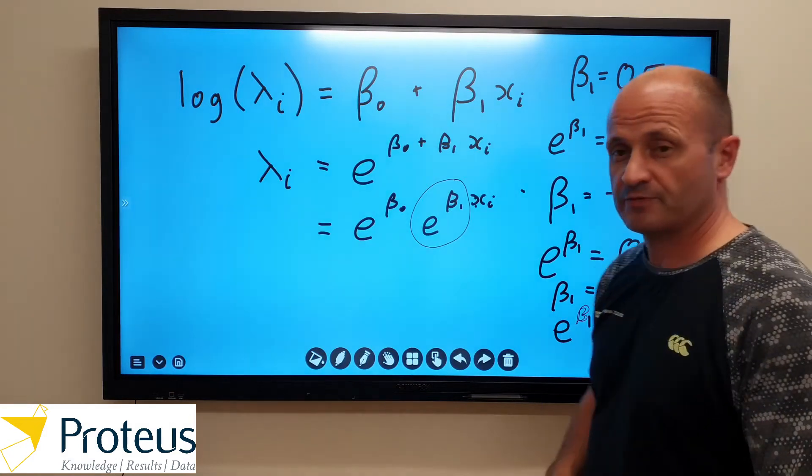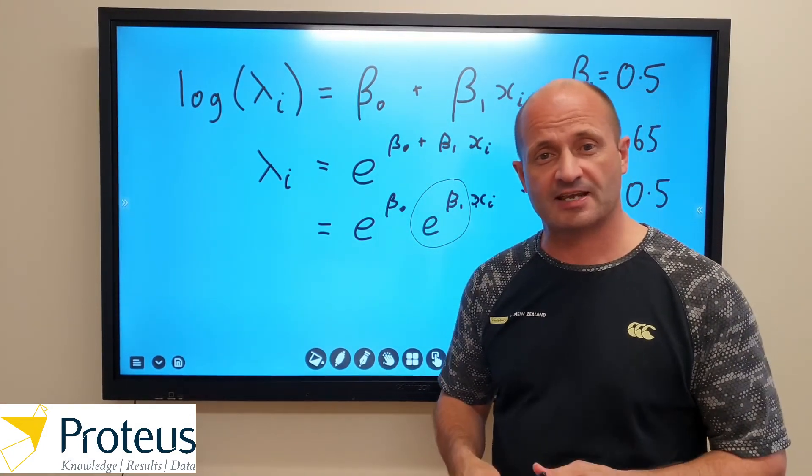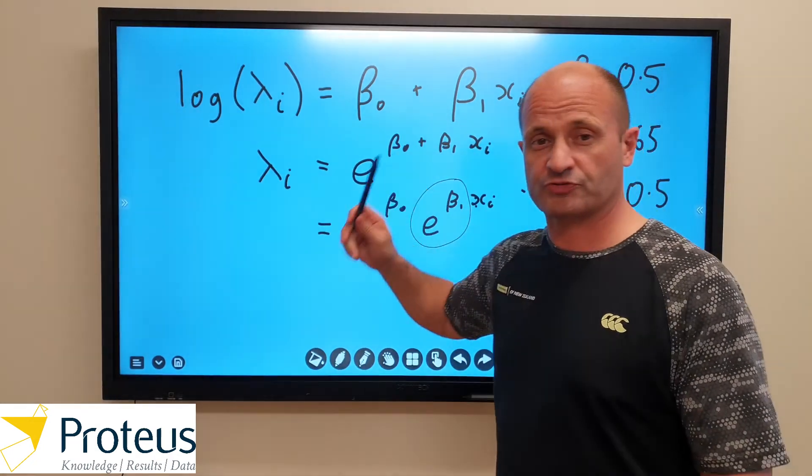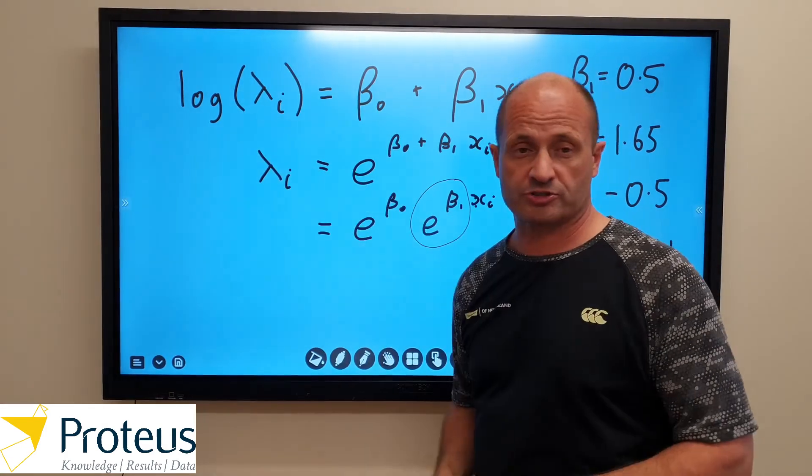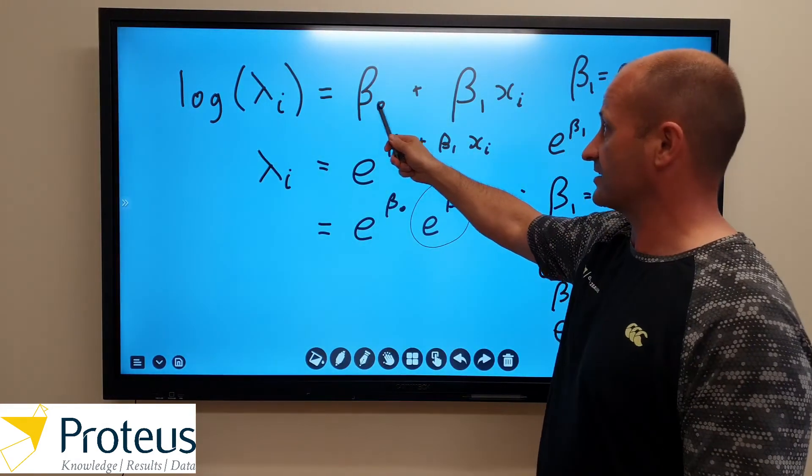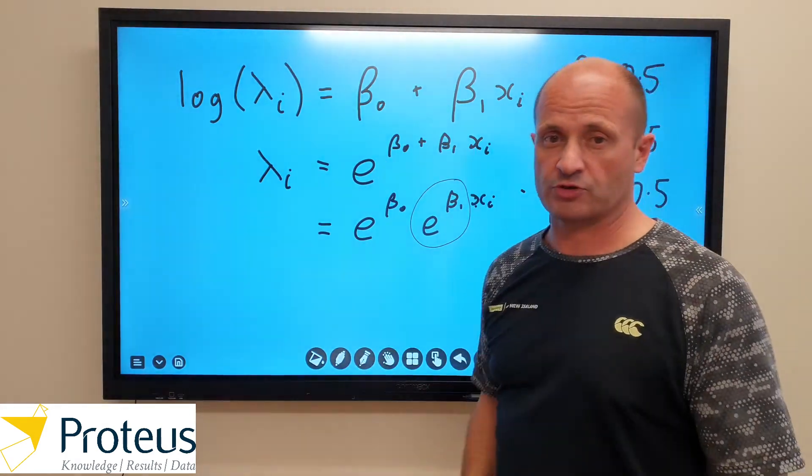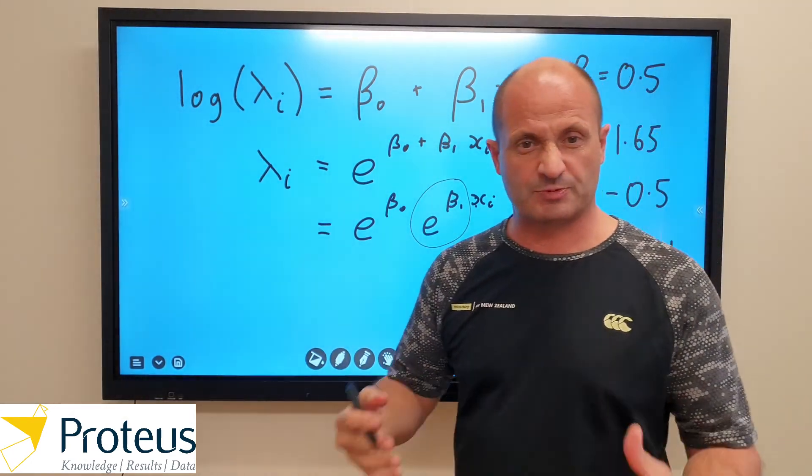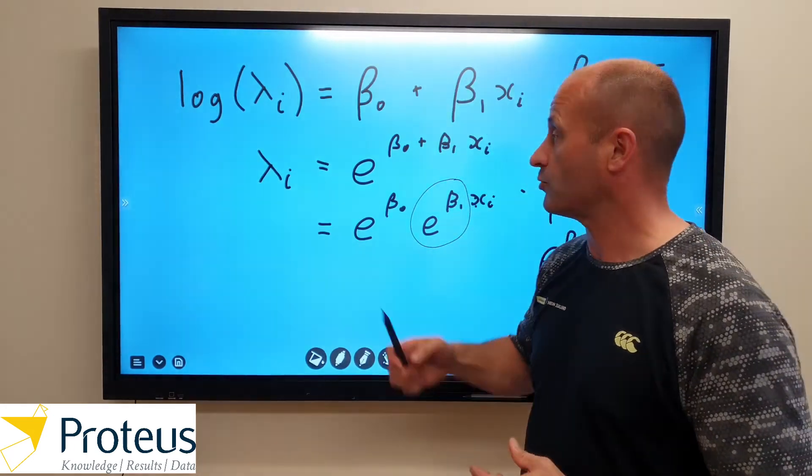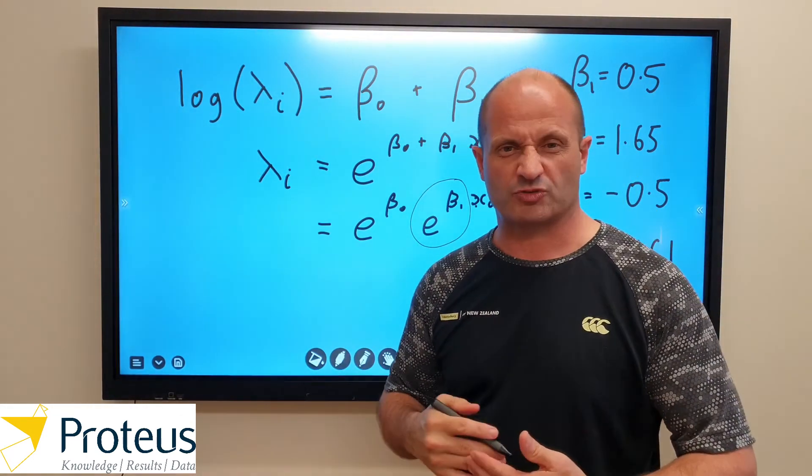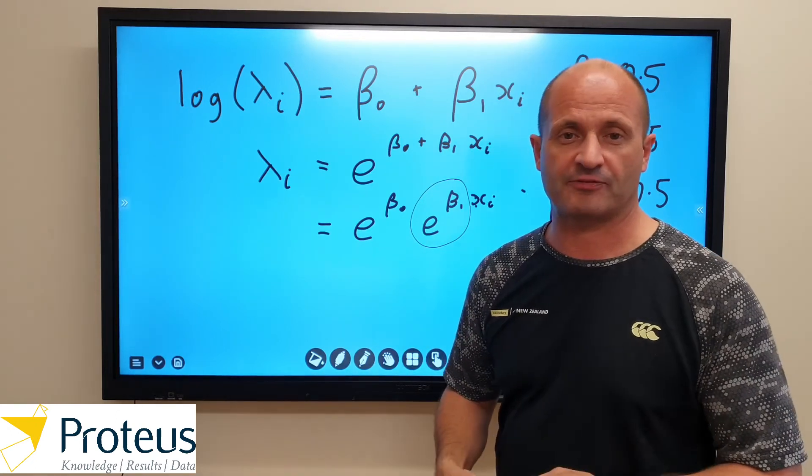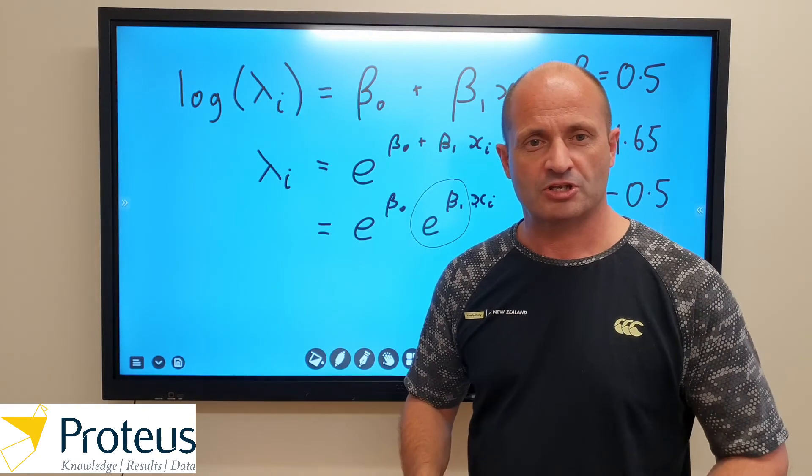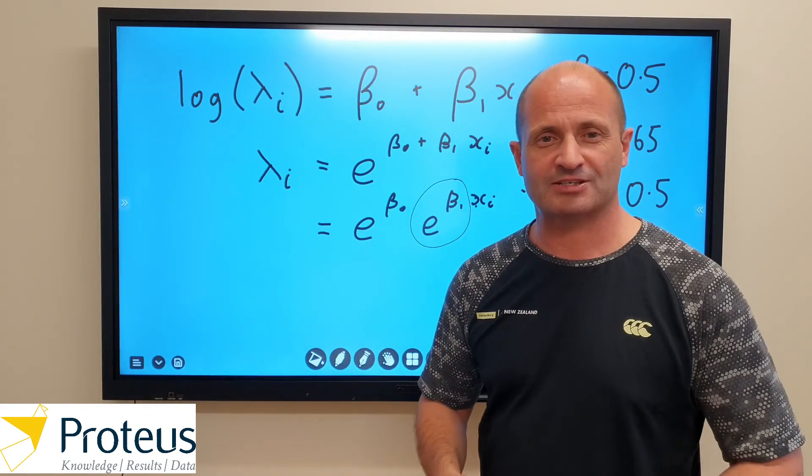So there you go. I hope you found that useful. So the idea here is that instead of interpreting our regression coefficients for Poisson regression, or whenever we're using the log link on the sort of additive raw scale of our regression equation, what we can do is interpret it on the scale of an exponential scale. And there, what we're talking about is the effect of the covariate, and a sort of scalar multiplicative effect on the item of interest, in this case, a Poisson mean. There you go. I hope you found that useful. Until next time, see you later.